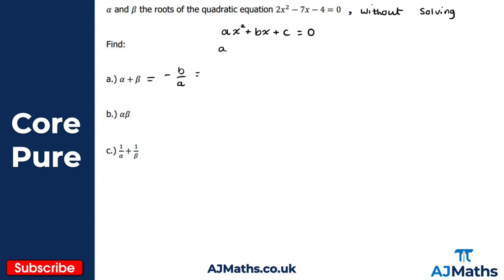Using minus b over a: that's minus minus seven over two, which gives us positive seven over two. So for part a, alpha plus beta equals seven over two.